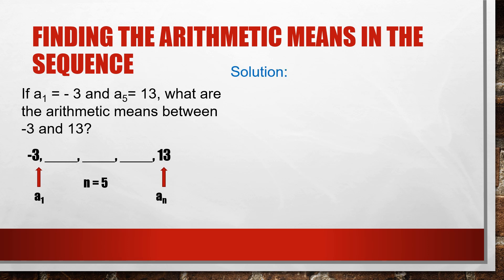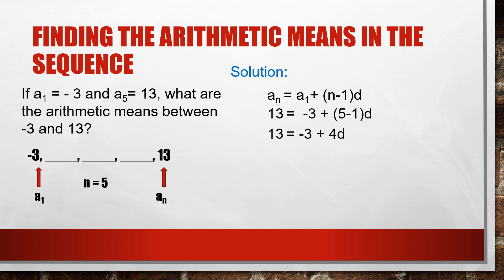Using the arithmetic sequence formula, a sub n equals a sub 1 plus (n minus 1) times d, substituting: a sub n is 13, a sub 1 is negative 3, and n is 5. So 5 minus 1 is 4, giving 4d. So 13 equals negative 3 plus 4d. Adding 3 to both sides: 13 plus 3 is 16, and negative 3 plus 3 is 0. So 16 equals 4d. Dividing both sides by 4, d equals 4.